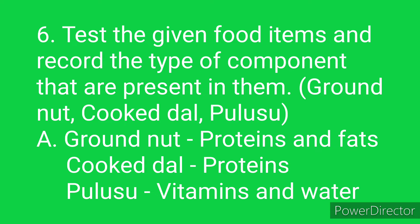Sixth question: Test the given food items and record the type of components that are present in them — groundnut, cooked dal, pulusu. Answer: Groundnut contains proteins and fats. Cooked dal contains proteins. Pulusu contains vitamins and water.